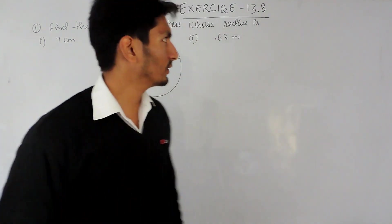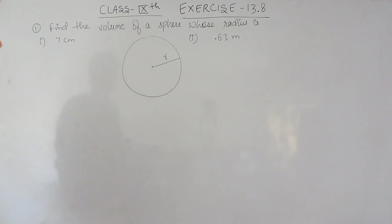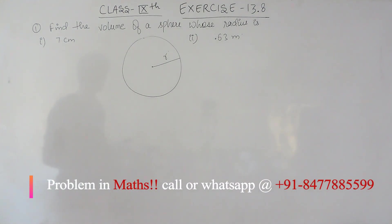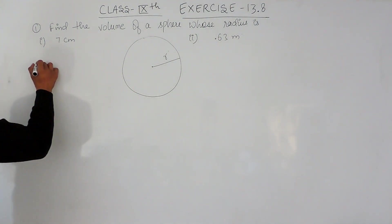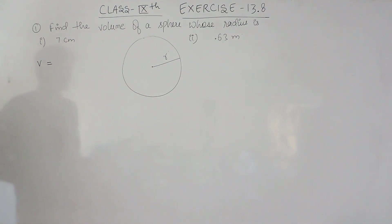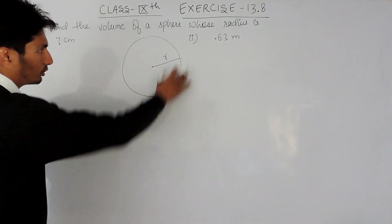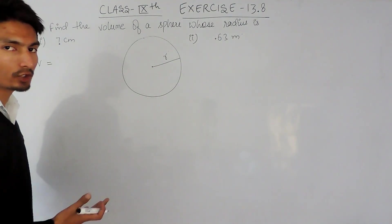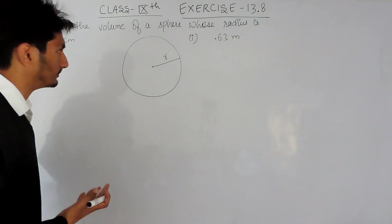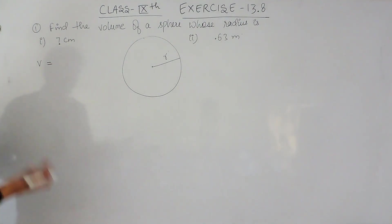Hello everyone. In this video we are going to solve question 13.8 which says: find the volume of a sphere whose radius is 7 centimeters and 0.63 meters. We have to find the volume in two cases. A sphere is a 3D figure — it looks like a football, a cricket ball, or a tennis ball. These are examples of a sphere.